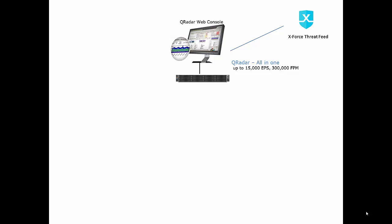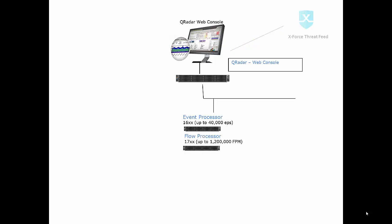After we get past this and we start to get to some larger environments, we need a distributed model. So that all-in-one becomes a web console to which I add any number of event or flow processors. Some of my largest customers in the world are moving up to two million events per second off a two-tier infrastructure just like this — we can add event processors or flow processors to your heart's content.